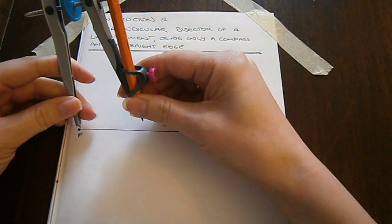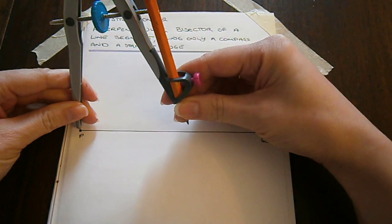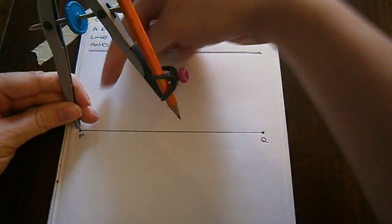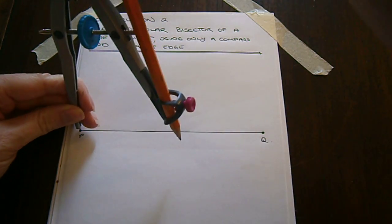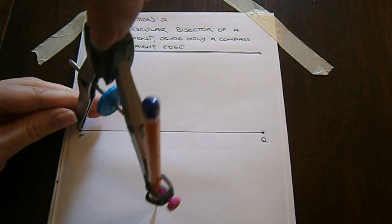We take our compass and expand it so that it's greater than halfway the distance between P and Q. We swing an arc on either side of the line.